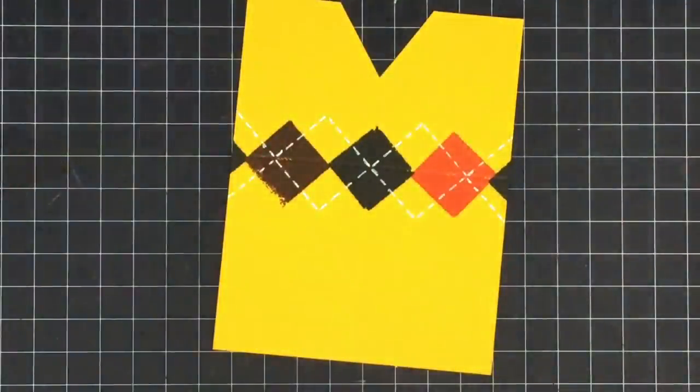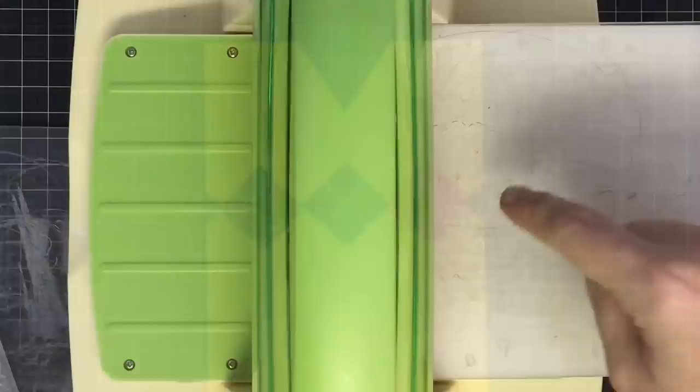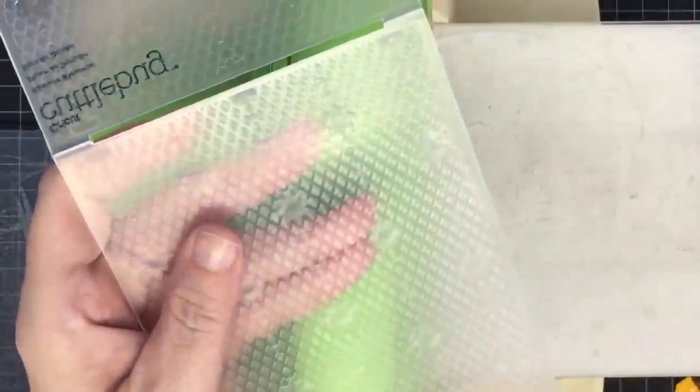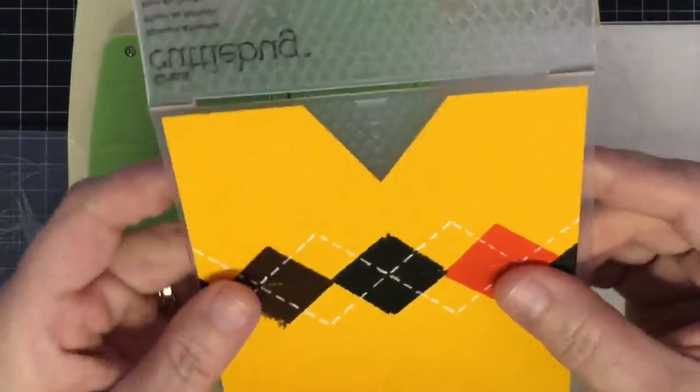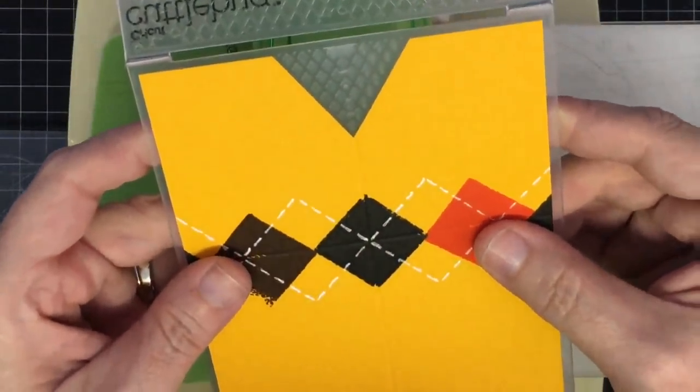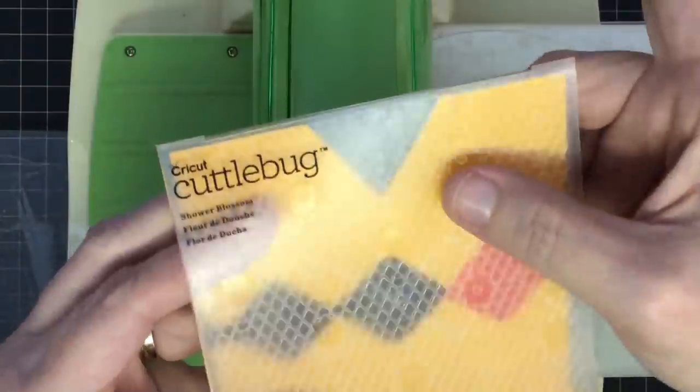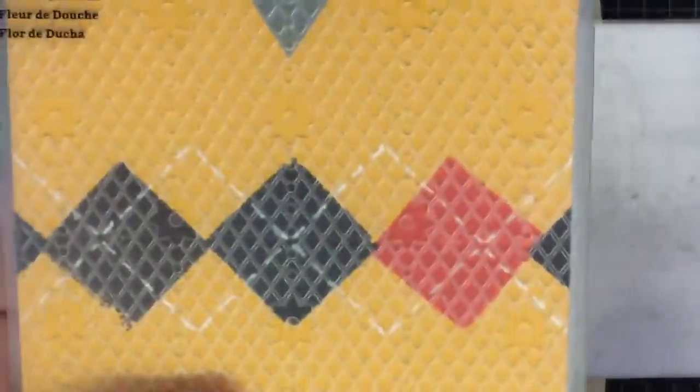In my Cuttlebug, I have my A plate and my B plate. This is kind of the closest thing I had to sweater texture—it's really not, but it kind of looks like sweater texture. It's actually called the Spring Blossom folder, but can you see that it's kind of textury like that? I thought it would work really good for the sweater, so we're going to use it.